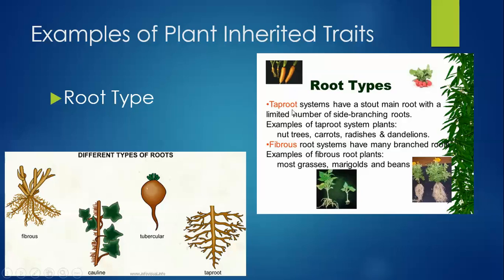In explanation of a tap root: tap root systems have a stout main root with a limited number of side branching roots. Some examples include nut trees, carrots, radishes, and dandelions. Here we see the examples for tap roots. Fibrous root systems have many branch roots. They include grasses, marigolds, and beans.